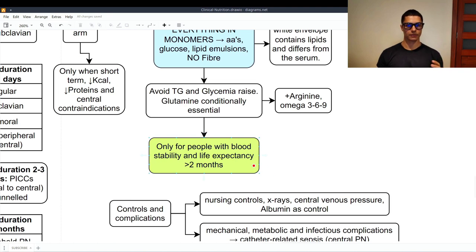And the parenteral nutrition, this is very important, is only for people with blood stability and a life expectancy of over two months. If they are not stable with their circulation, and they are going to live less than two months, then we are not going to give them the parenteral nutrition. I know it may sound hard, but in the next video, we are going to talk about exactly that, the bioethics behind the clinic.